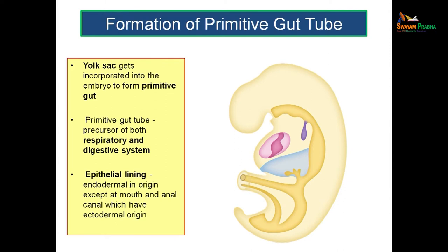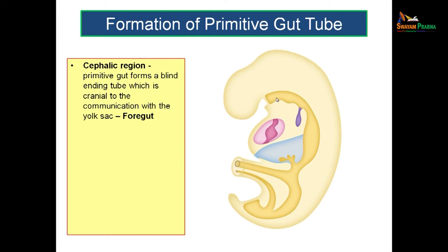The epithelial lining of the gut tube will also be endodermal in origin, except at the two ends — the future mouth and the future anal canal. At these regions, you will not get an endodermal lining but an ectodermal lining. Throughout the rest of the gut tube, you will get an endodermal lining since the yolk sac was previously lined by the endoderm. At the cephalic region, the primitive gut actually forms a blind end which is in communication with the yolk sac. The cephalic region — the primitive gut forms a blind ending tube which is the cranial end, and it is in communication with the yolk sac. This part is known as the foregut. So the primitive gut extends from the oral cavity to the anal canal, and the cephalic end of this region is known as the foregut.